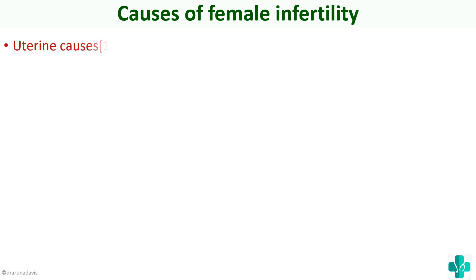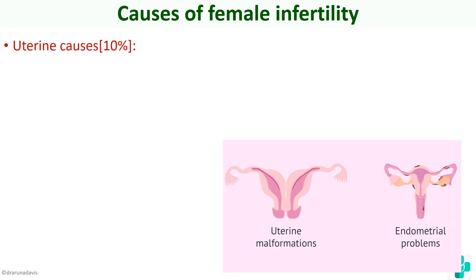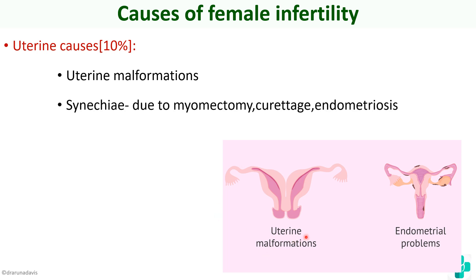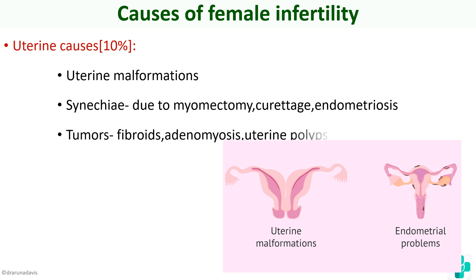Next are the uterine causes of female infertility. These include malformations of the uterus which prevent implantation, or endometrial problems decreasing the chance for implantation. Uterine causes include uterine malformations, as well as synechiae — abnormal intrauterine adhesions due to myomectomy, curettage, or endometriosis. Tumors like fibroids, adenomyosis, and uterine polyps also make implantation difficult.